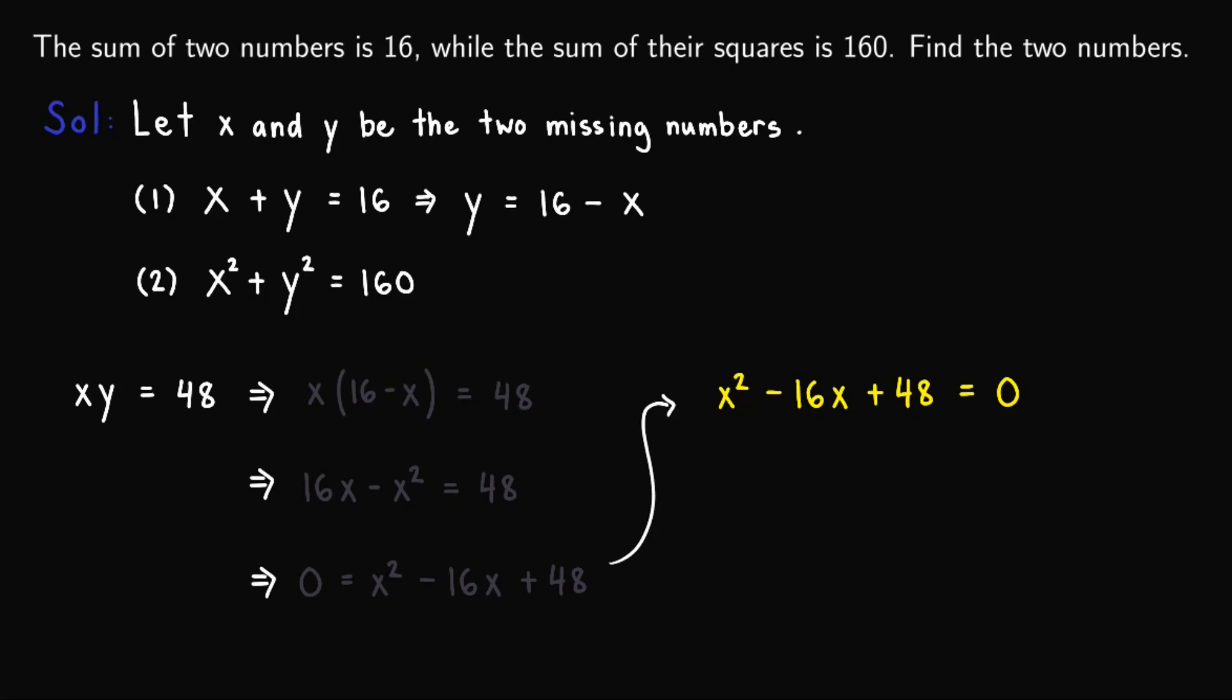So observe that negative 16 equals negative 4 plus negative 12, while 48 equals negative 4 times negative 12. This means that the quadratic equation factors into (x minus 12) times (x minus 4) or (x minus 4) times (x minus 12).